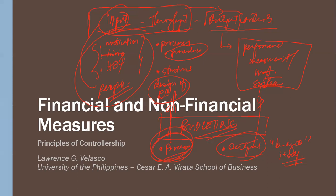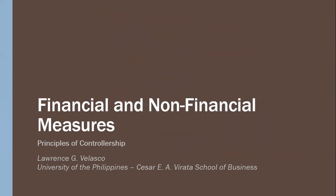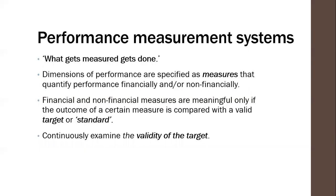We now focus the discussion on performance measurement systems, which are a component of output controls. What are performance measurement systems? Essentially, this is a system of how to measure performance. There's a traditional adage in organizations: what gets measured gets done. The theory is that for the objectives of the organization to be attained, you must be able to measure performance against it. If you're able to measure performance, managers will definitely work towards the attainment of those goals, because there is monitoring happening.